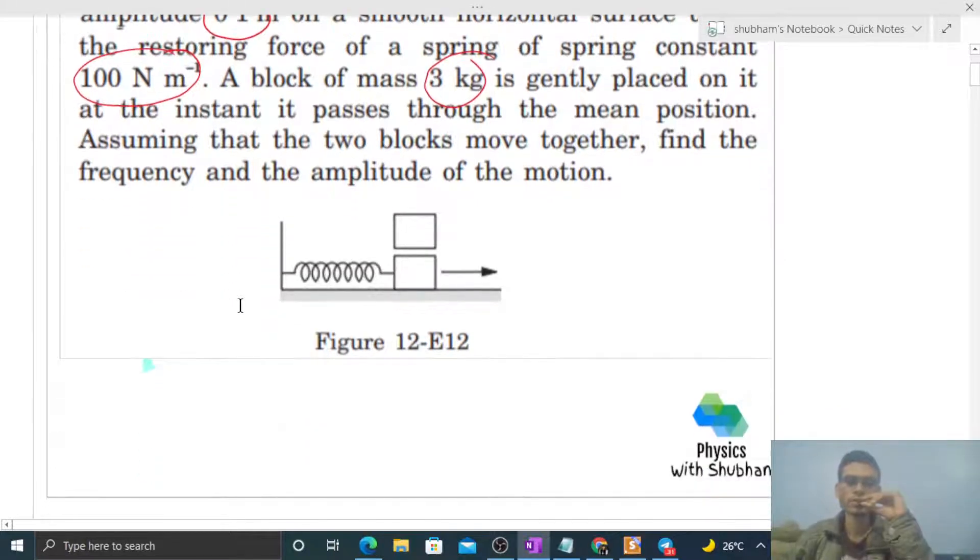So the diagram shows the spring constant is 100 Newton per meter, and the lower block has mass 1 kilogram which undergoes SHM with amplitude 0.1 meter.